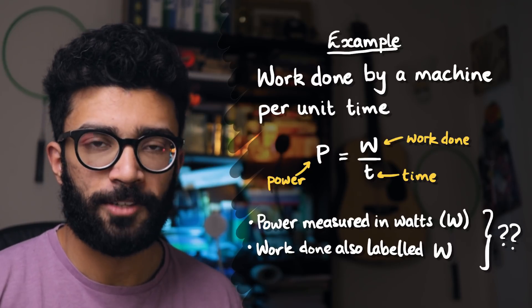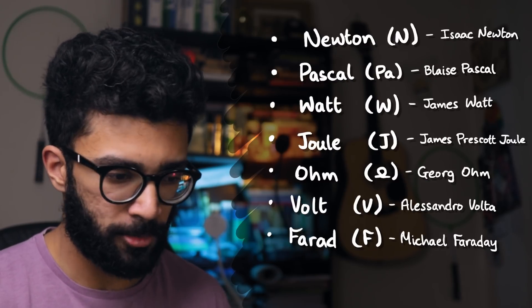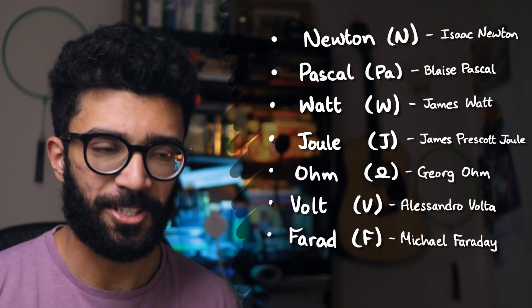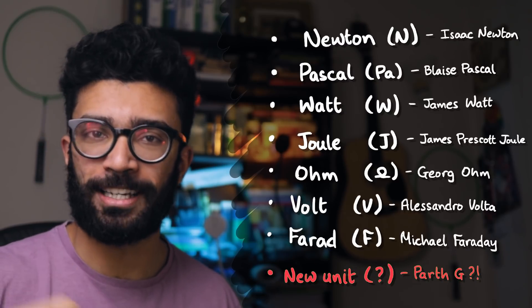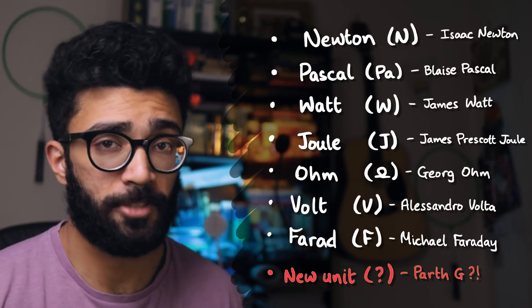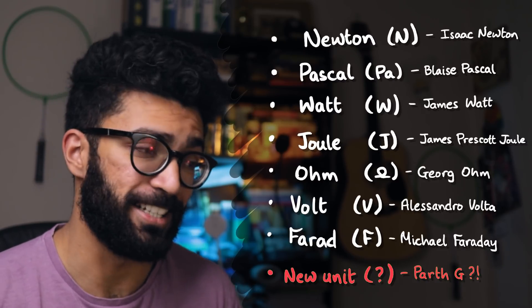Now, lots of units are named after scientists. The Newton, the Pascal, the Watt, the Joule, the Ohm, the Volt, the Farad... You get the gist of it. And I think you can also see where I'm going with this. The new unit of momentum that we're inventing right now in this video, I'm going to be a little bit cheeky and name it after myself. Because, you know, this is about the only useful contribution I'm going to make to the world of physics anyway. However, there is a problem.